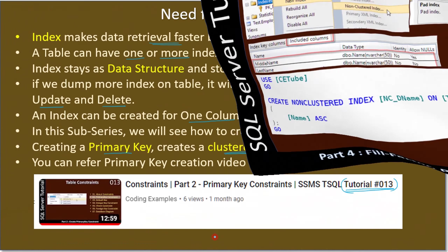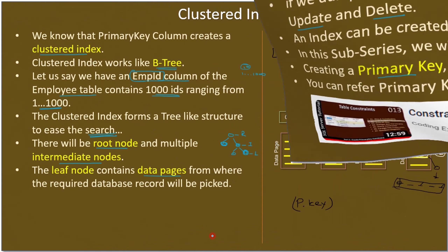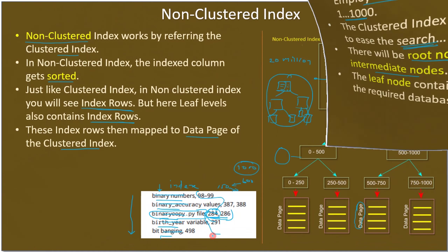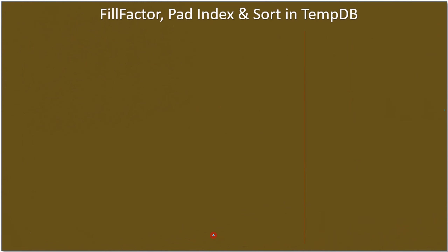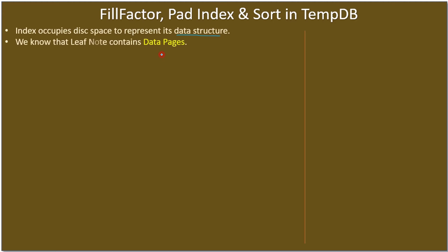We know that an index occupies disk space to represent its data structure. This data structure is involved in both clustered as well as non-clustered indexes. We know that the leaf node contains data pages. By default, the fill factor will be 100, which means the page will be fully loaded.